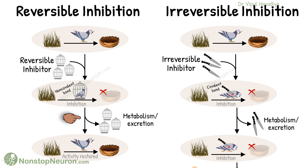However, this binding is non-covalent, so the enzyme can detach from it. Upon removal of the inhibitor, the enzyme activity is restored. This removal may occur by metabolism or excretion of the inhibitor. Thus, this is reversible inhibition. An example of such inhibition is the inhibition of the cholinesterase enzyme by physostigmine.